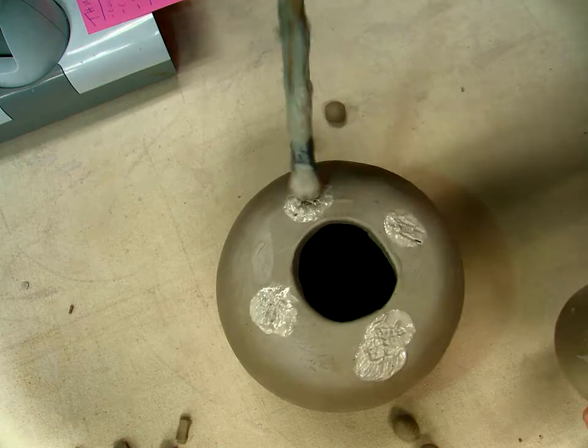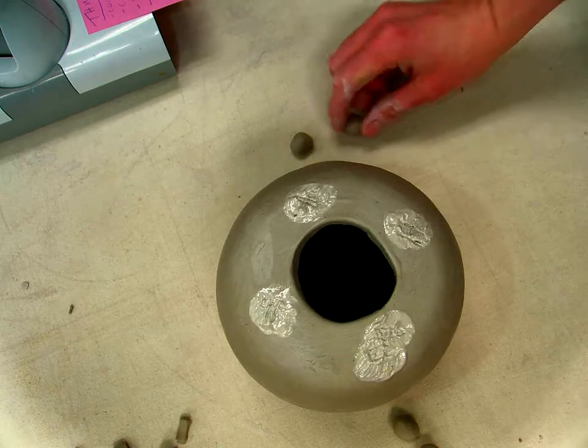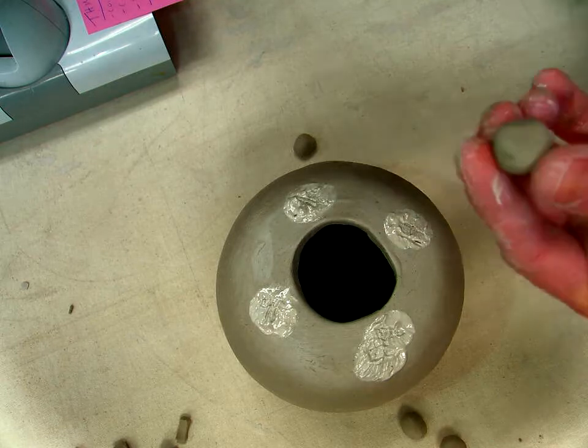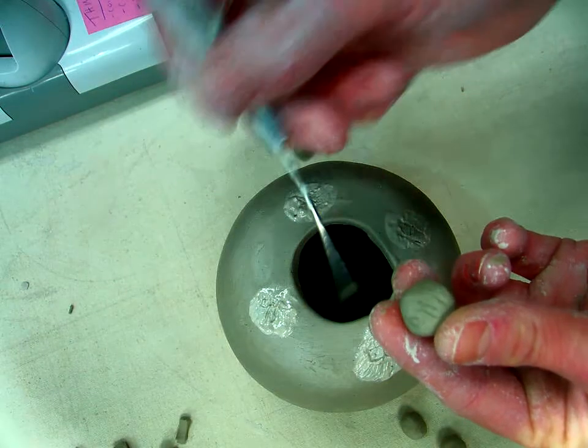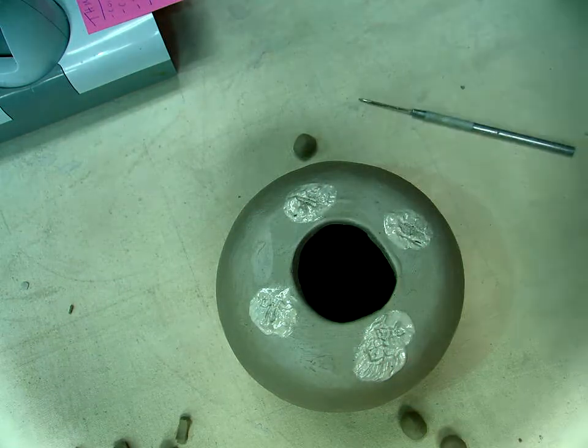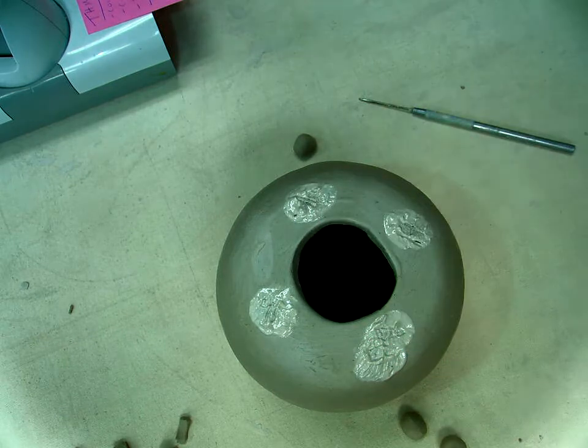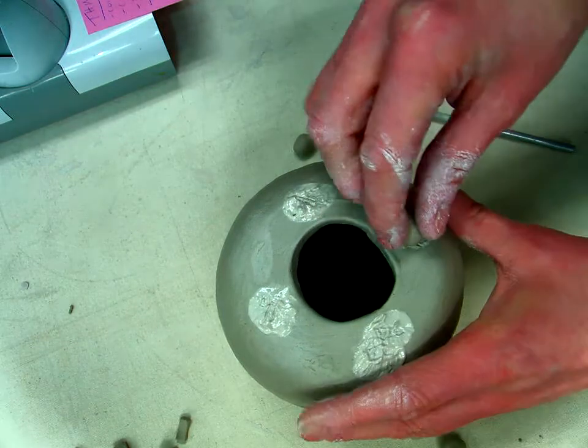And then you just have to slip the area here where you scored up. Remember, scratch to attach and slip it to stick it. And then I take the spherical pieces and score them. Like so. And then I'm also going to slip them. And then attach them where they need to go.